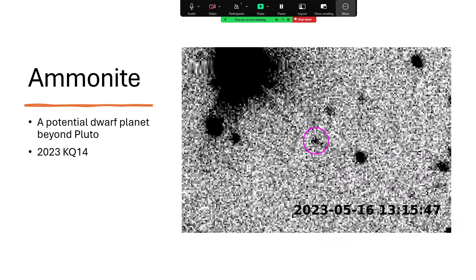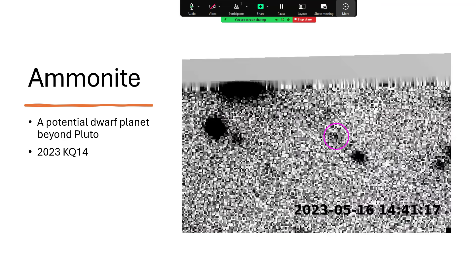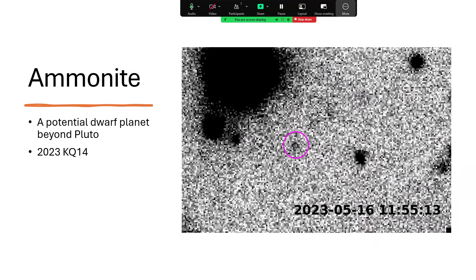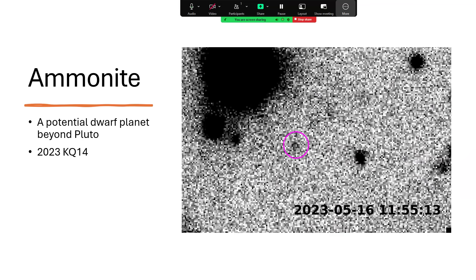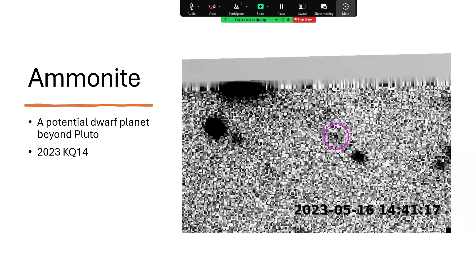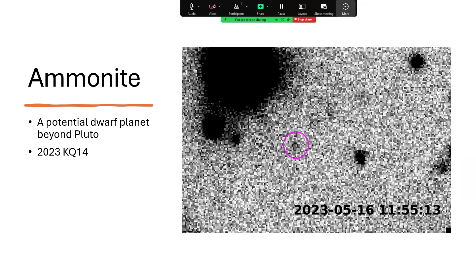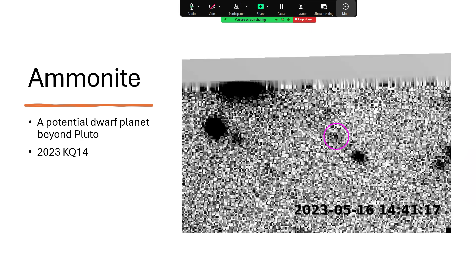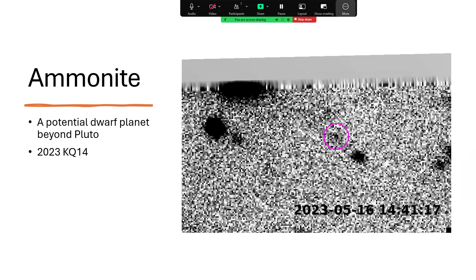Now, the other thing that was announced very recently was the detection of this object, shown with the purple ring around it to help you pull it out of the noise there. This is called Ammonite. It's a potential dwarf planet out beyond Pluto. The catalogue number 2023 for the year of discovery, KQ14. And so what do we know about this?